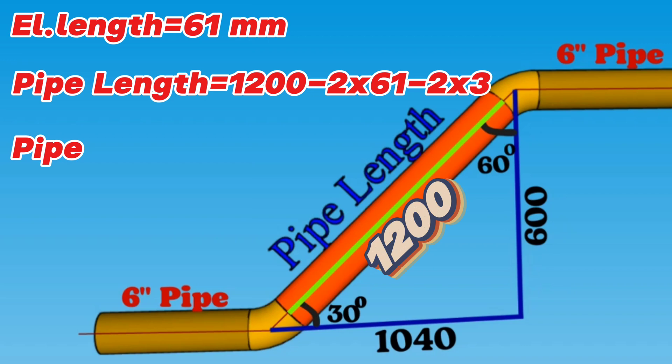At last, we calculated and found pipe length will equal 1072 millimeters.